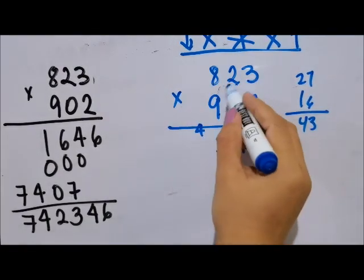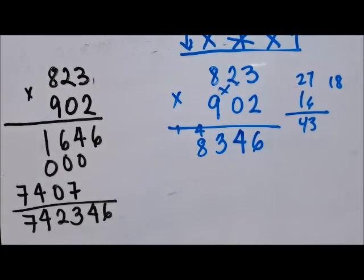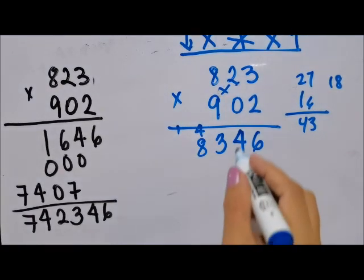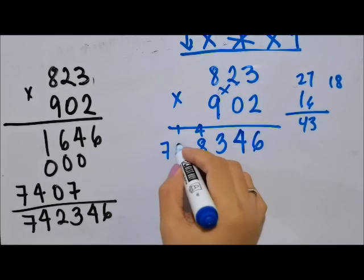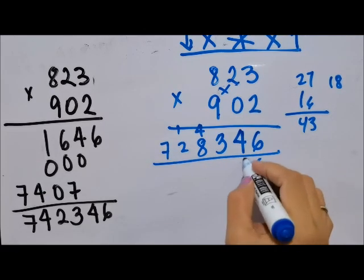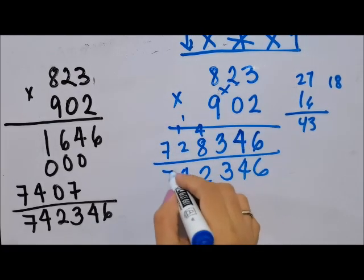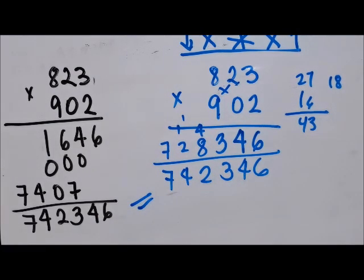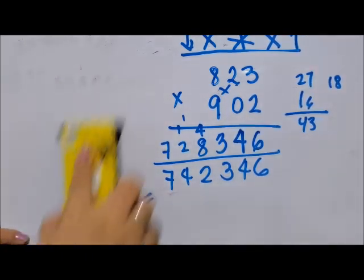Next, the cross: 2 times 9 is 18, 8 times 0 is 0, so 18. Then down: 9 times 8 is 72. Now we add: 6, 4, 3, 2, 4, and 7. Same and easy. Another example.